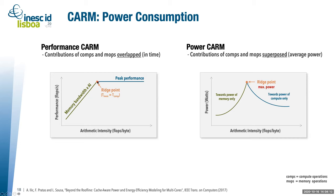As we compute more — meaning arithmetic intensity increases in the compute region — the contribution of memory to total execution time diminishes. As arithmetic intensity grows, power consumption asymptotically drops toward the power required only to run the compute units. Similarly in the memory-bound region, since time is dominated by memory transfers and compute contribution diminishes, power drops toward the power consumed by the memory levels being accessed.